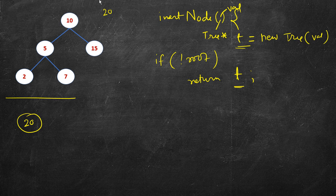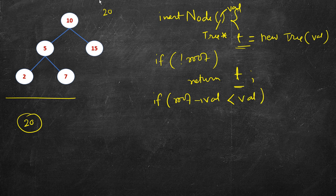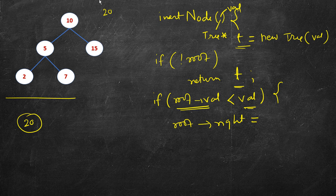Otherwise, if root is not null, we check: if root's value is less than the value to insert, then the new node should go in the right subtree of the root. So root's right should be updated. For example, at node 10, since 20 is more we call the same function on its right child, which is 15.